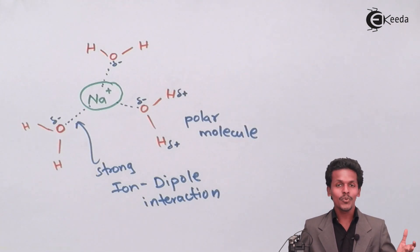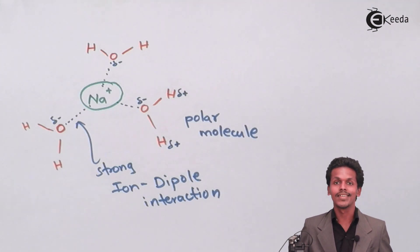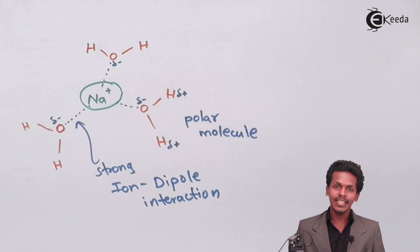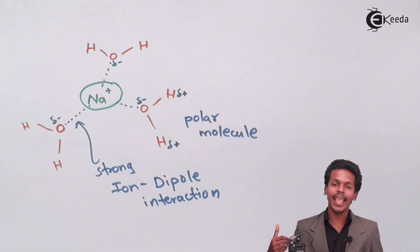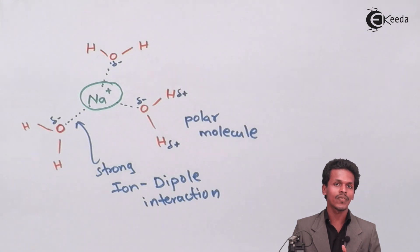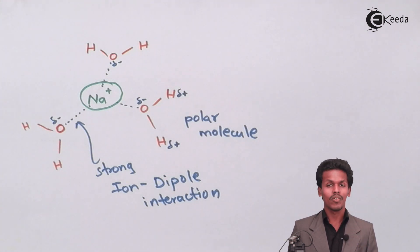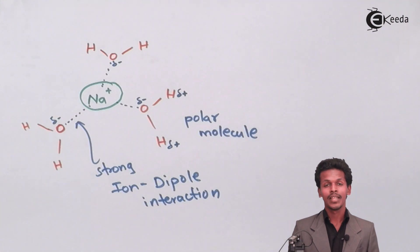This concept is not only applicable to NaCl — you can take any example where there is an existence of a cation and anion interacting with a dipole or a polar molecule.